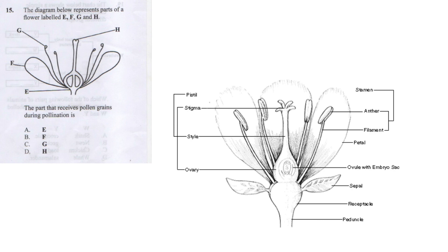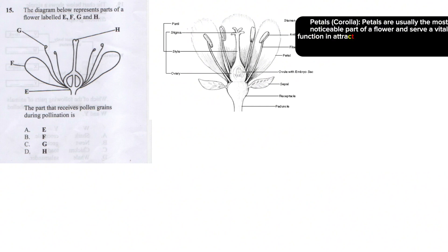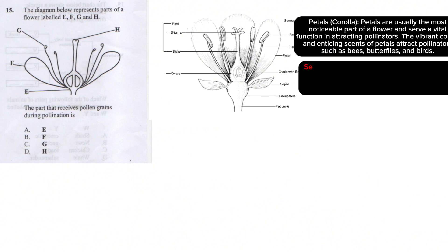Let's talk about the function of each part. Petals, also called corolla, are the most noticeable part of a flower. They serve a vital function in attracting pollinators — the vibrant colors and enticing scents attract bees, butterflies, and birds.